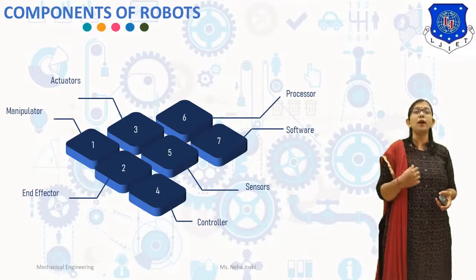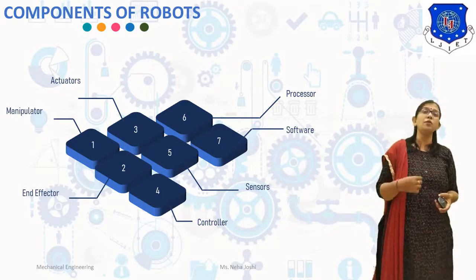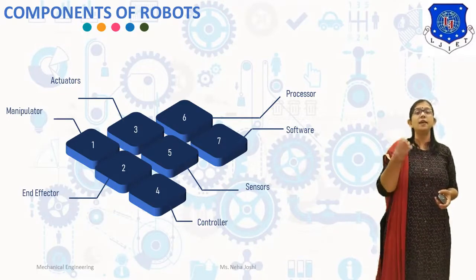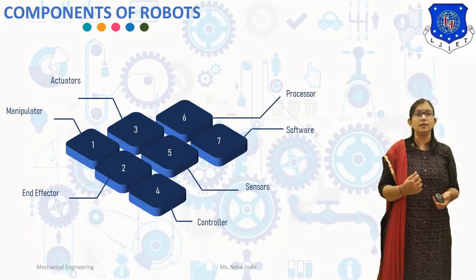Sensors used in robots are generally of two kinds: non-visual sensors and visual sensors.